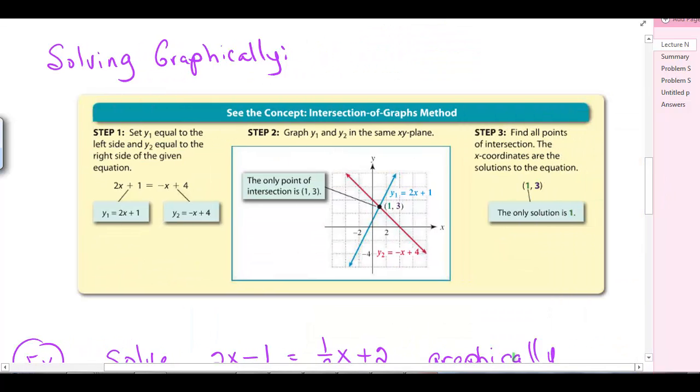Now, solving graphically. You can use your graphing calculator to do this. Set y1 equal to the left side and y2 equal to the right side of the equation. Graph them in the same plane and find the intersection point. The x coordinates are the solutions to the equation.